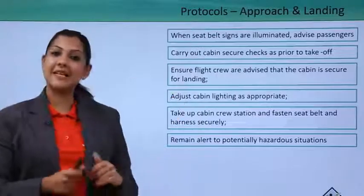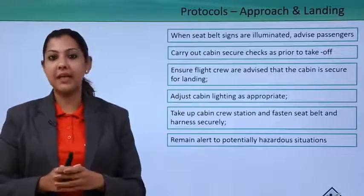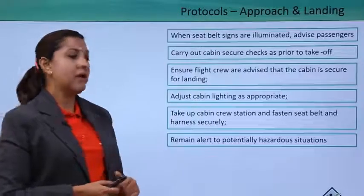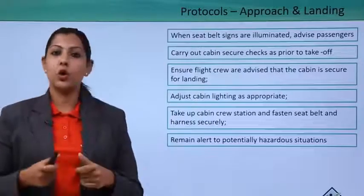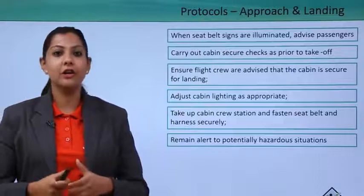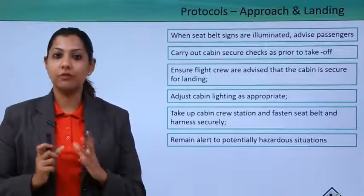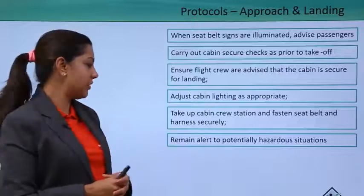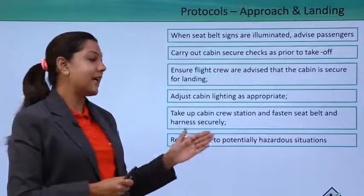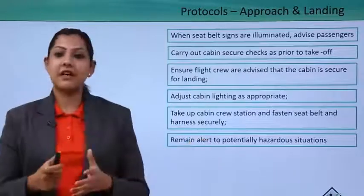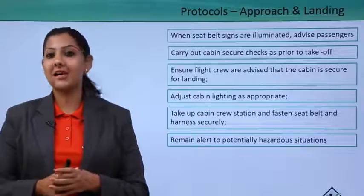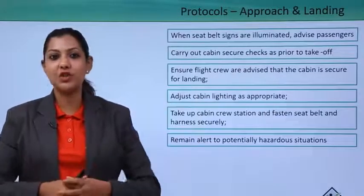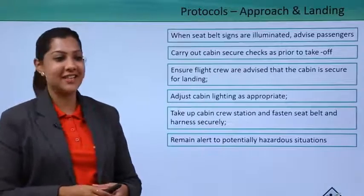Cabin lighting is adjusted as appropriate — lights are dimmed or switched off. Crew take up their crew stations, fasten their seatbelts, and sit in their designated positions. They remain alert to any hazardous situation, watching for any suspicious movement from passengers before landing.